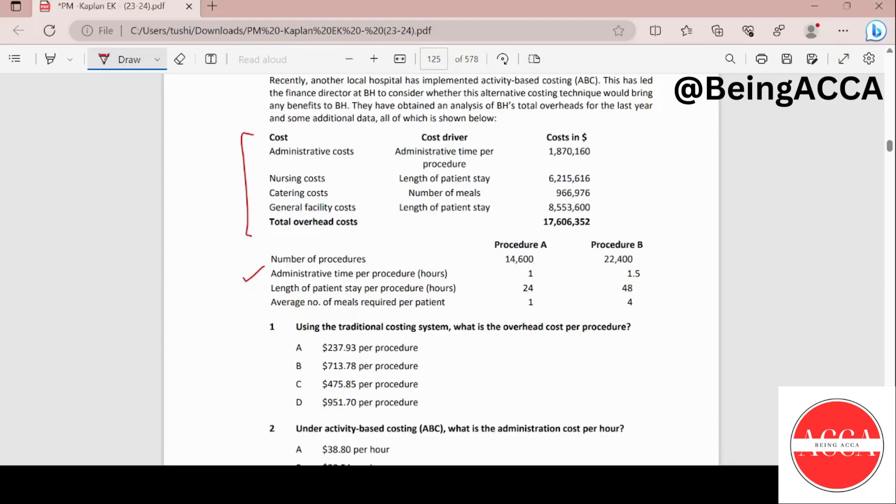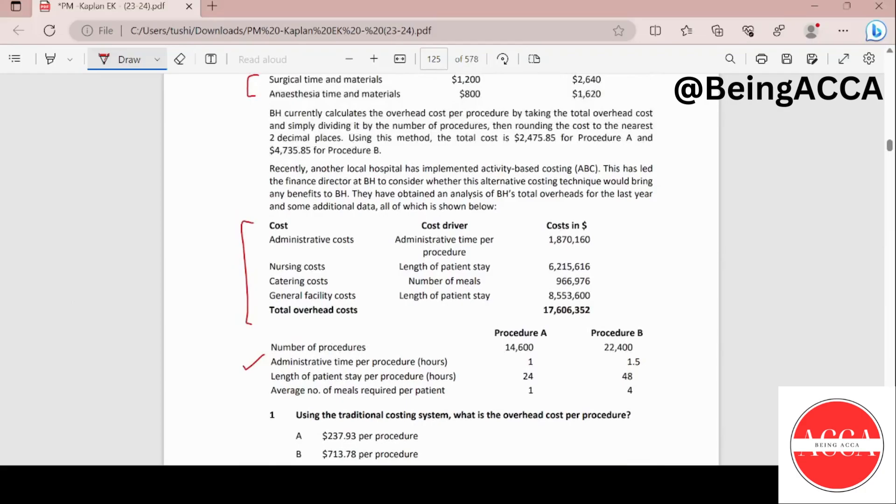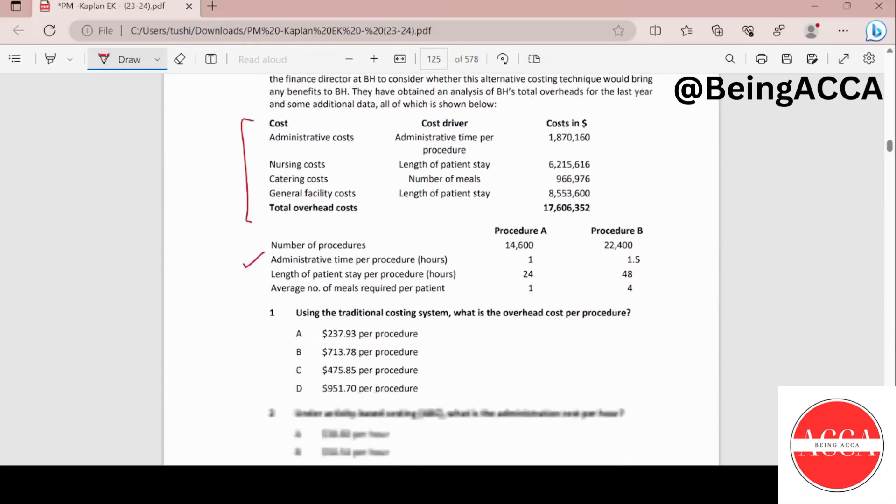So reading the first question: using the traditional costing system, what is the overhead cost per procedure? What we saw was they currently calculate the overhead cost per procedure by taking the total overhead costs and simply dividing it by the number of procedures. So I'm going to do exactly this.